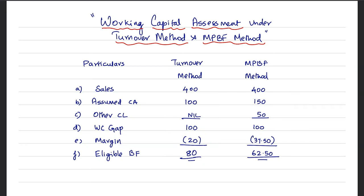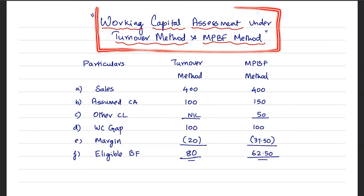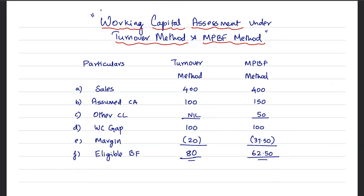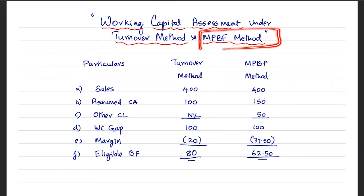Let's get into the webinar. In this video, let's do a small comparison between the Turnover Method and the MPBF Method with regard to working capital assessment. Both the methods are used for assessing working capital required for a business entity. The Turnover Method is used for assessing working capital limits up to 5 crore, and the MPBF Method, which is the result of the Tandon Committee, is used for assessing working capital beyond that.